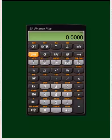You can clear all five of those keys by hitting second and clear time value of money. Or, since you've got five keys and you're going to solve for one of them, just enter something in the other four, even if one of them is zero.